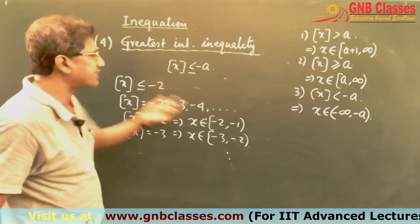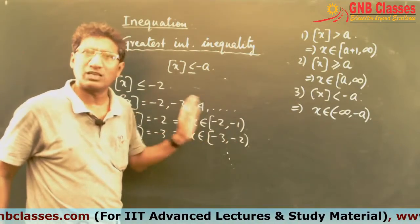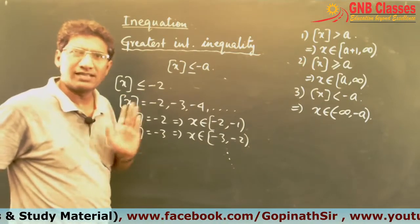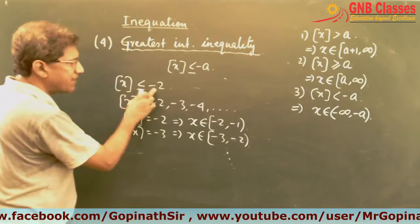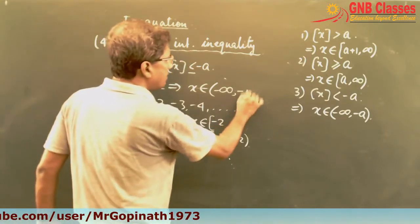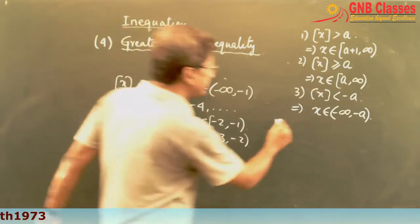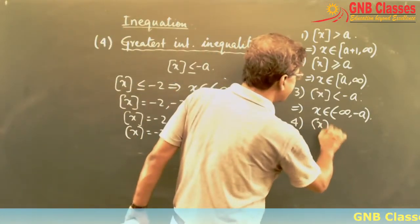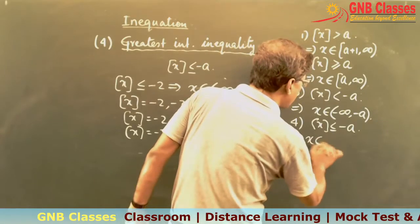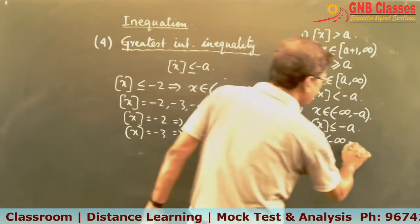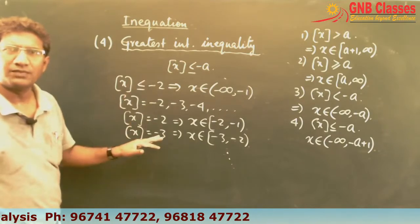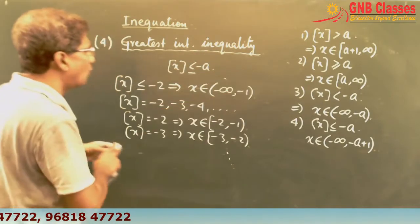Under any circumstances, x cannot be more than −1, nor equal to −1 — it is always less than −1 and extends to −∞. So we can write x belongs to (−∞, −1). The fourth formula is: when ⌊x⌋ ≤ −a, then x belongs to (−∞, −a+1).